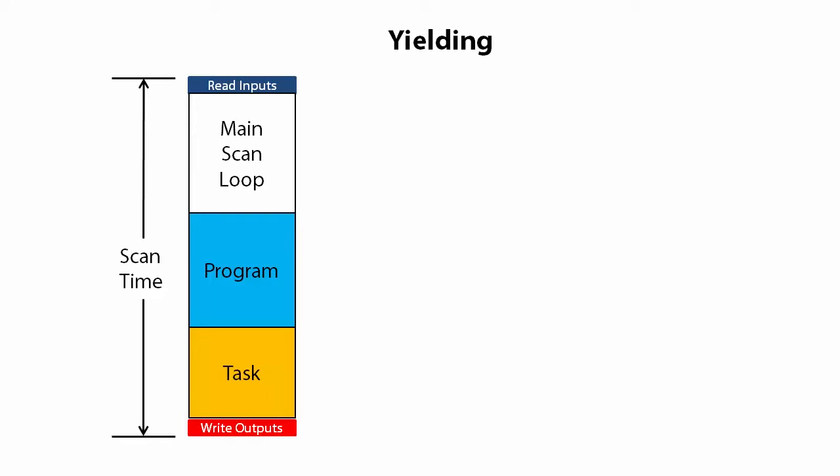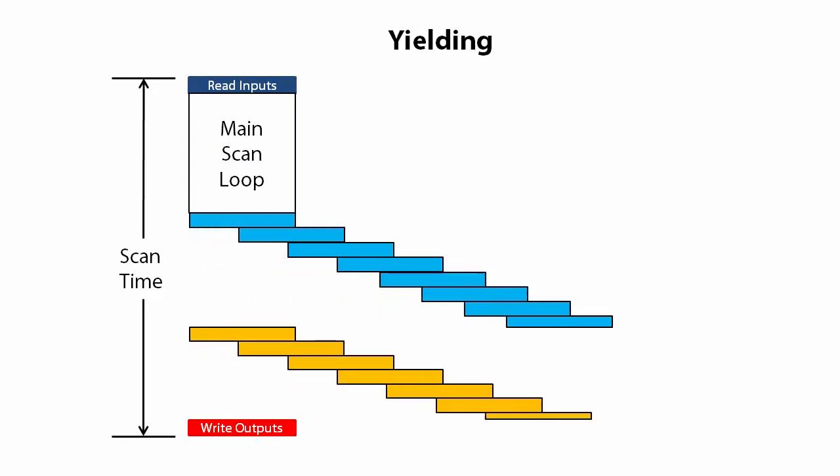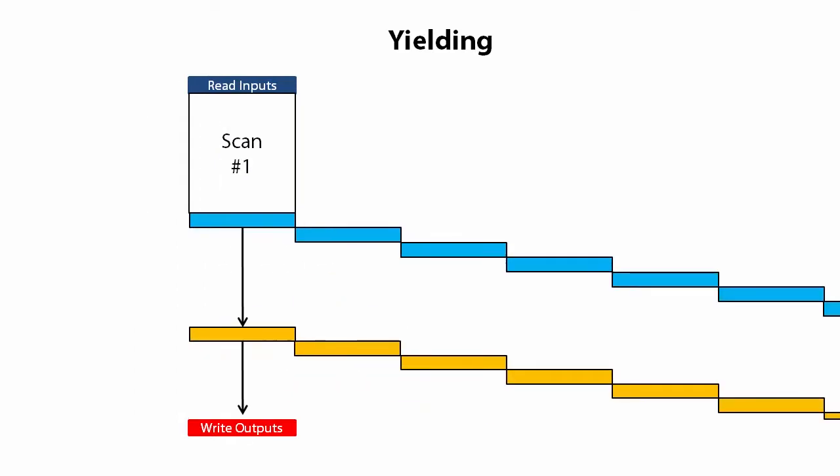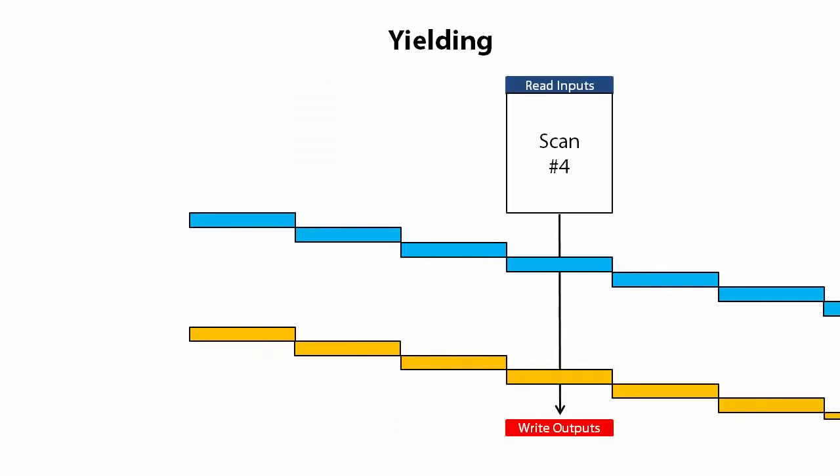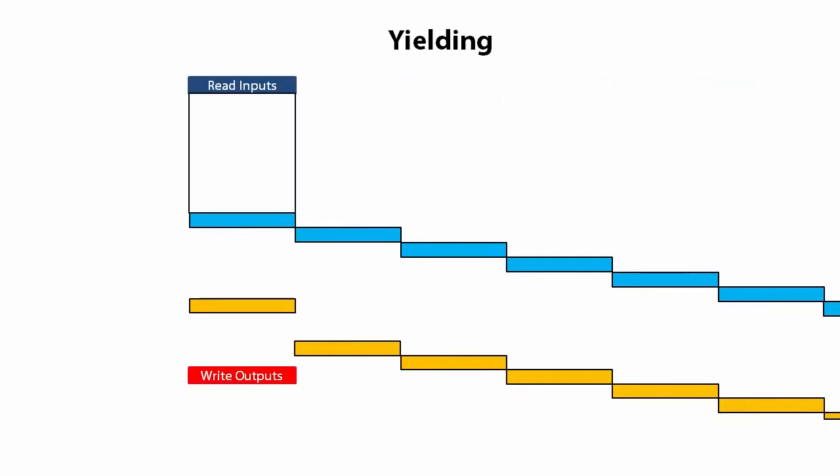Those can take a long time and you really don't want them to slow down your main scan loop to do it. Well, that's where yielding comes in handy. The Do More PLC lets you tell programs and tasks to do just a little bit of the job each scan so your main process isn't affected.